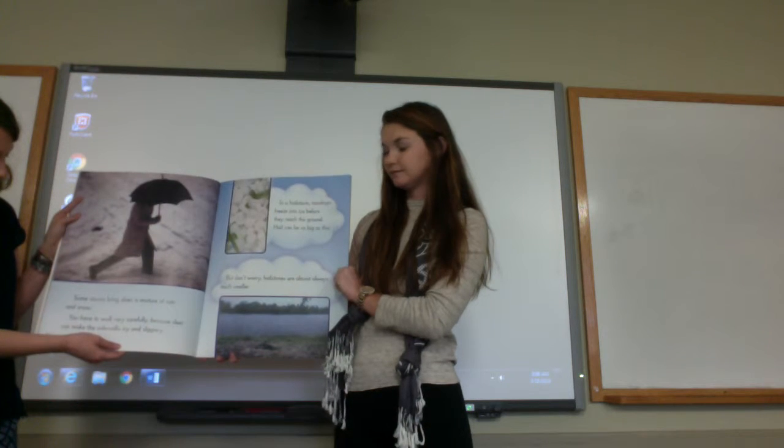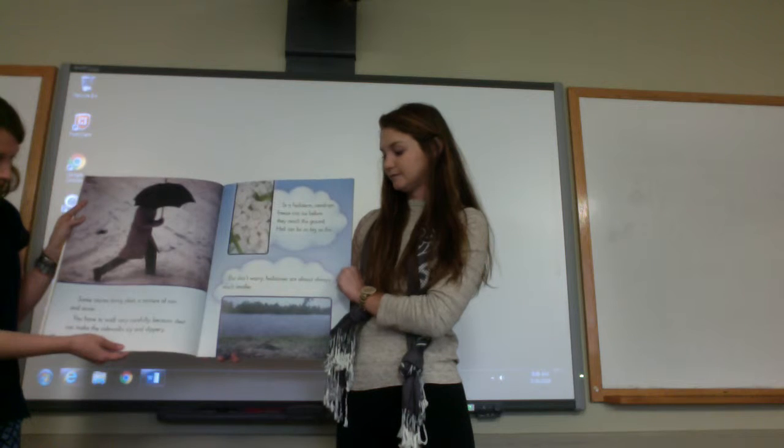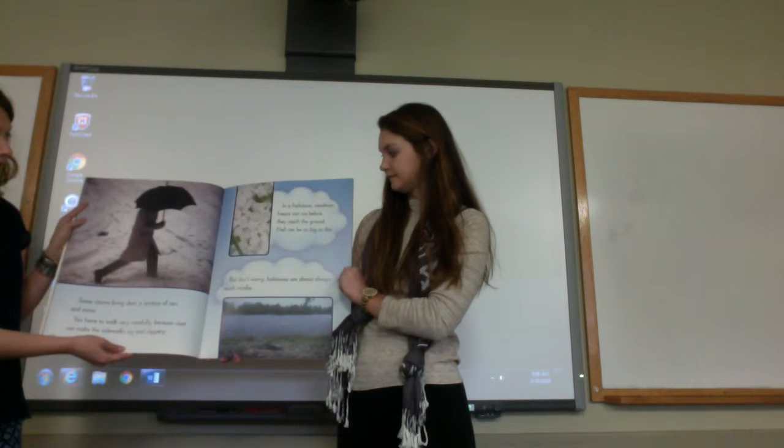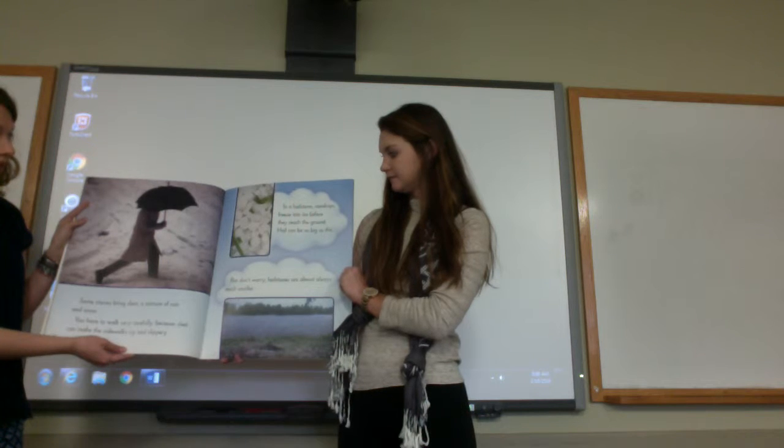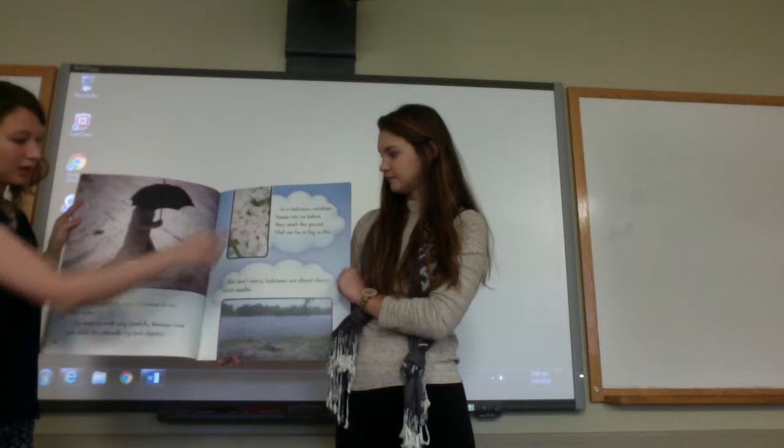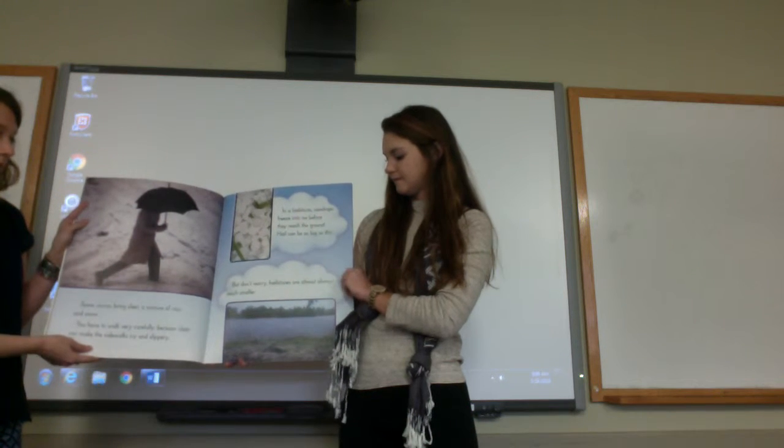Some storms bring sleet, a mixture of rain and snow. You have to walk very carefully because sleet can make the sidewalks icy and slippery. And a hailstorm, raindrops freeze into ice before they reach the ground. Hail can be as big as this. Do you see that? That's really big, but don't worry, hailstones are almost always much smaller.